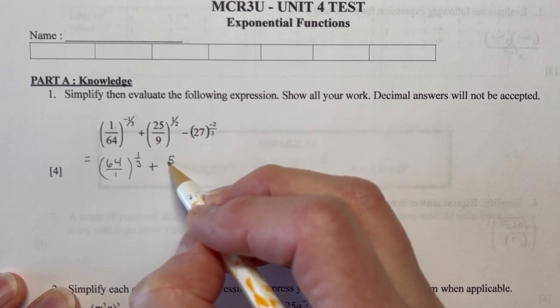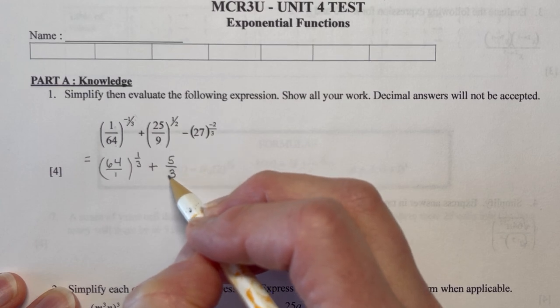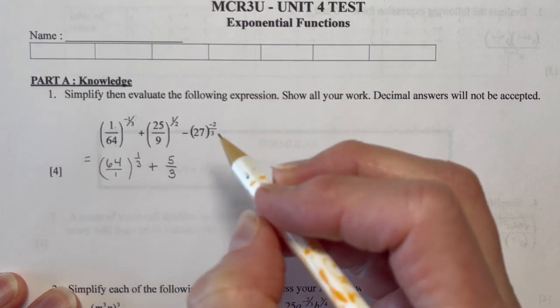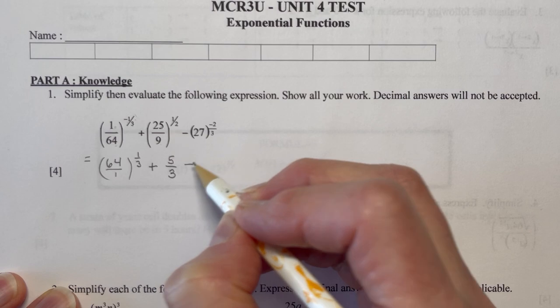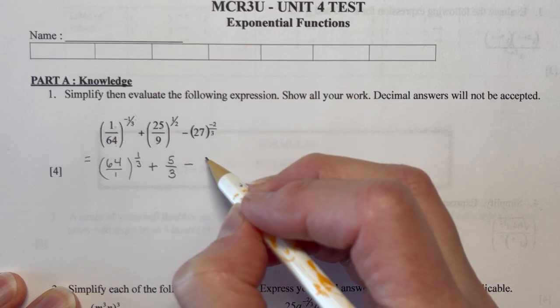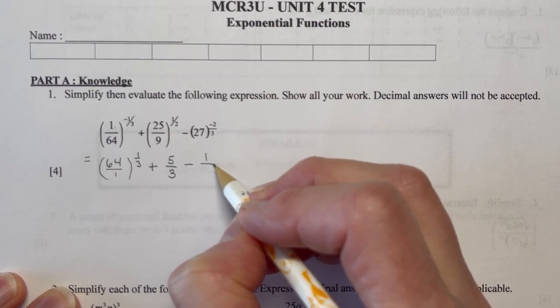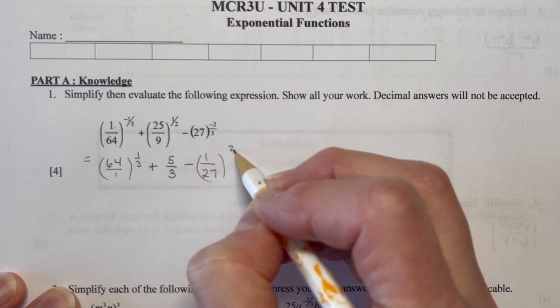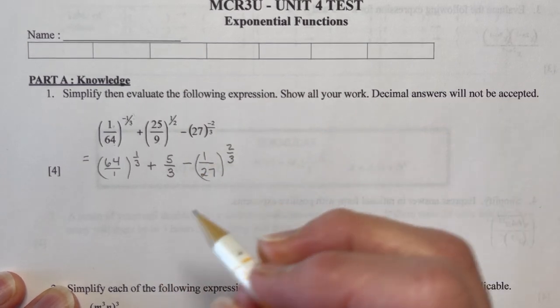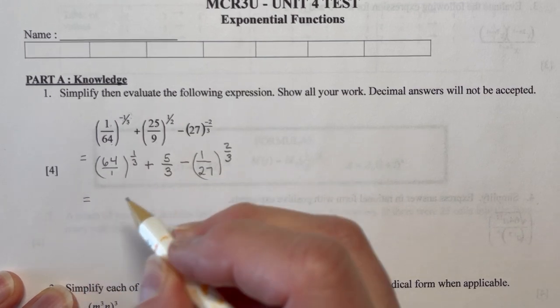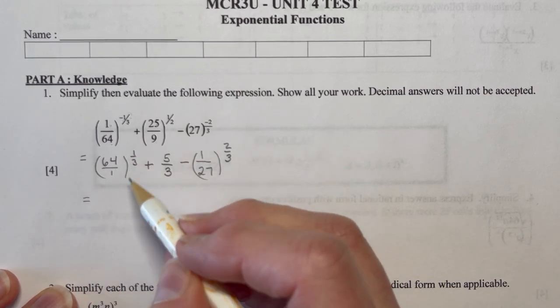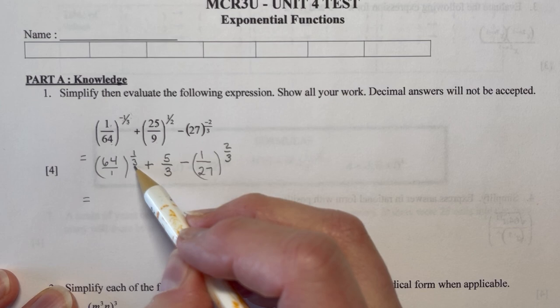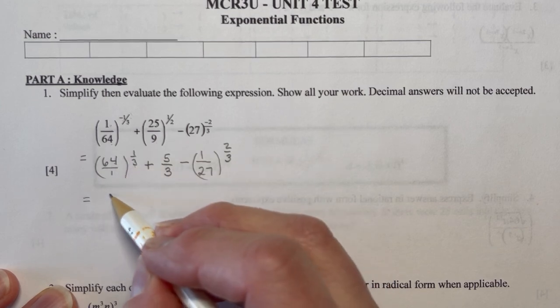Don't forget to take the square root of both parts, so 5 over 3. And this one as well, the negative 2 thirds, I can write this as 1 over 27 and make it to the positive 2 thirds, which makes things just a little easier to evaluate. So 64 to the 1 third, that's asking for the cube root of 64, which I know is 4.